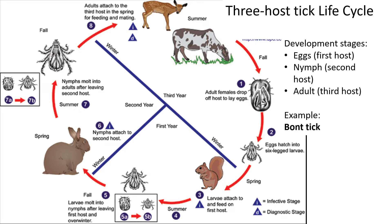Then we have the three-host tick, which uses three different species. Eggs hatch into larvae, which attach to the first host in year one. The larvae become more mature and attach to a second host — a bunny rabbit — in year two. They mature further and attach to a third host to become adults. So look at the life cycle: one, two, three hosts. A three-host tick example is the bont tick.